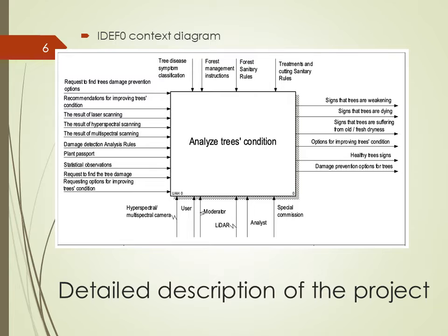As a result of user requests, the system gives signs that trees are weakening or dying, or suffering from drought or dryness, or that they are healthy. It also gives options for improving tree condition and damage prevention options for trees. As mechanisms for this system, there are three disease symptom classifications, forest management instructions, forest sanitary rules, and treatment and cutting sanitary rules.